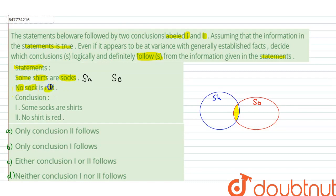No sock is red. So, no sock is red means that sock and red will be different circles. Sock will be disjoint from red. This is red, this circle is for red.